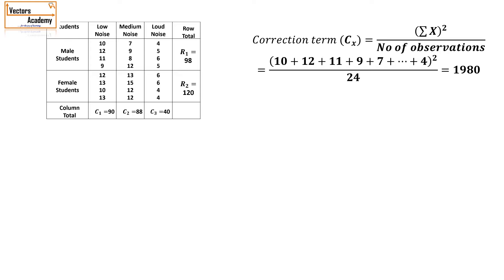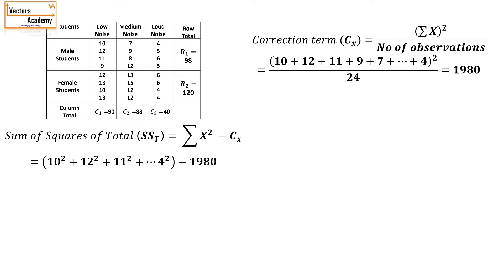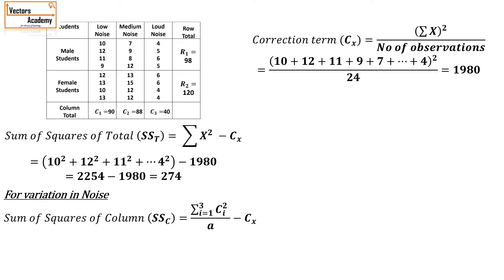That comes to 1980. Next, we need the sum of squares of total, so we square all the individual marks and subtract from the correction factor. Then we have the sum of squares of the columns. We have already found the column totals, so we square them, add them, and divide by the number of readings in each column — each column contains 8 readings — so we divide by 8 and minus the correction factor. That gives you 200.